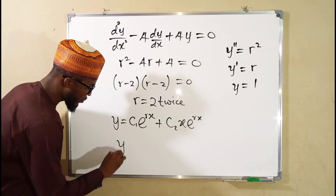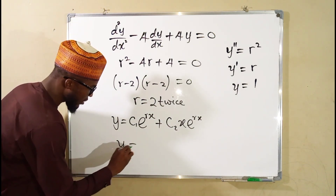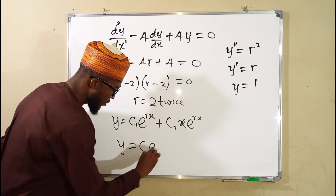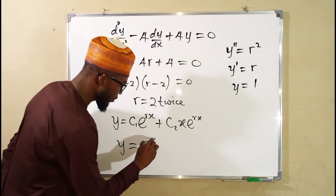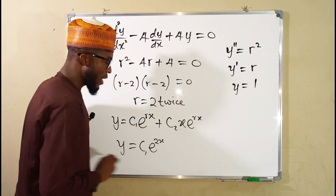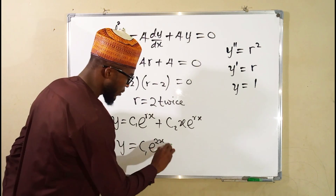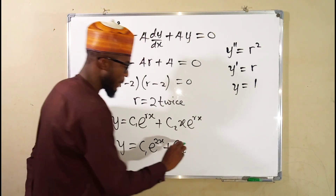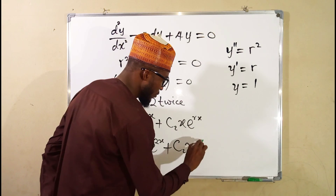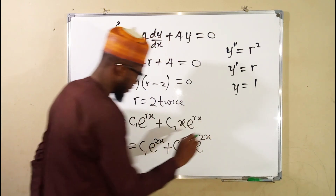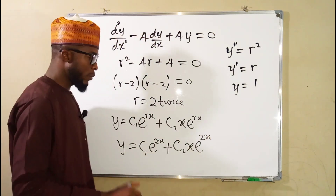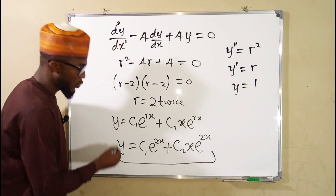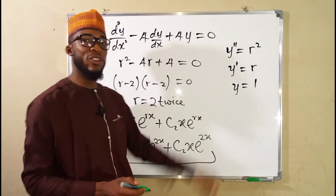So now let's substitute. Therefore, our general solution is: y equals c₁ times e to the 2x, plus c₂ times x times e to the 2x. So this is our general solution for this differential equation.